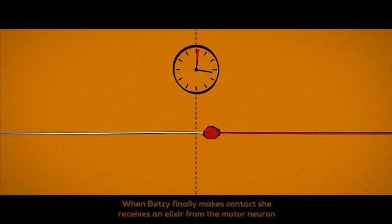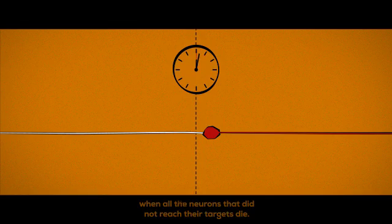When Betsy finally makes contact, she receives an elixir from the motor neuron which, when the clock hits zero, keeps her alive when all the neurons that did not reach their targets die.